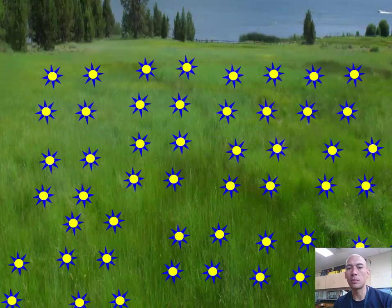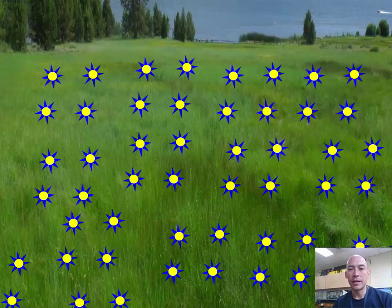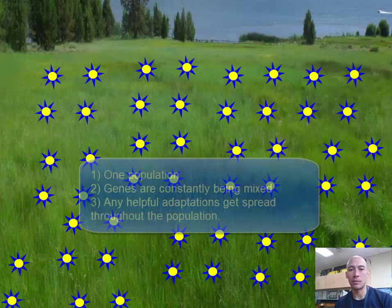Imagine a peaceful meadow with one population of flowers. Each flower in this population can breed with any other flower in the meadow, and does continuously for many years. The genes of any and all flowers are constantly being mixed together, and as a result, they continue to be the same species.